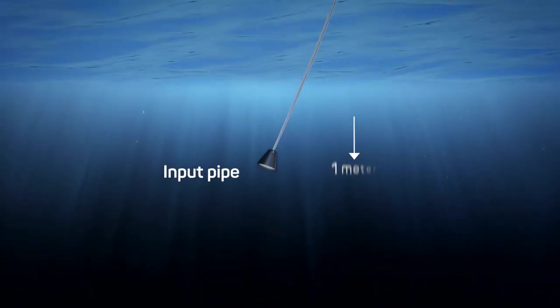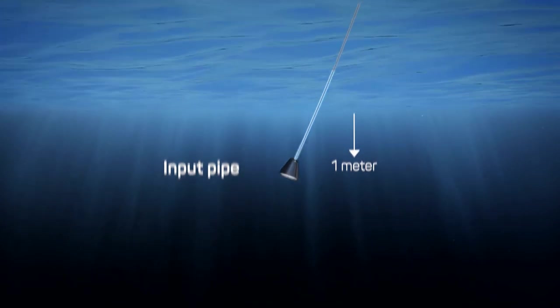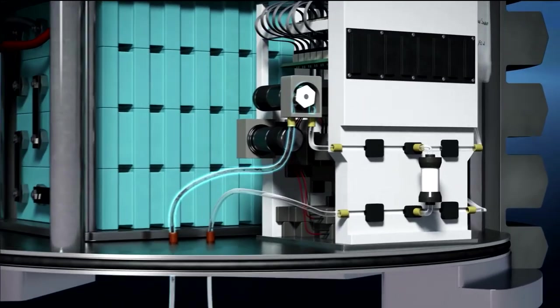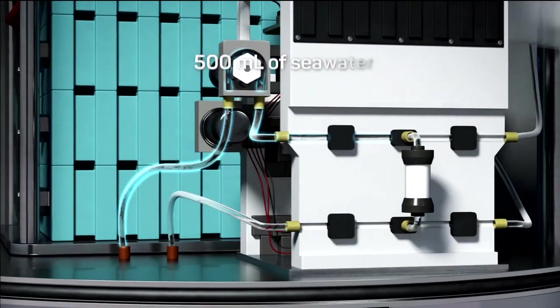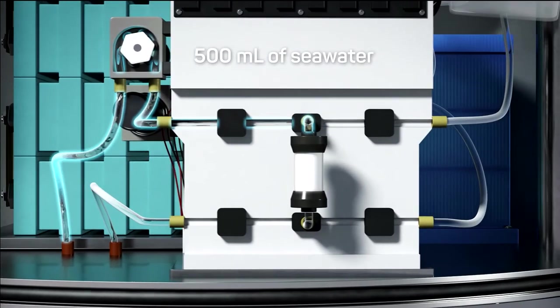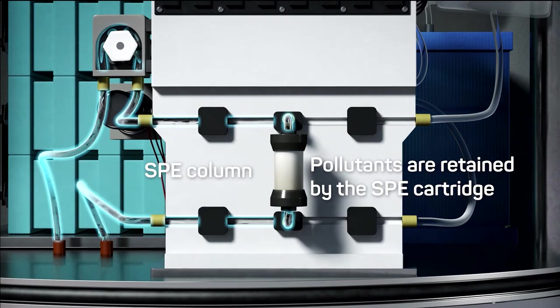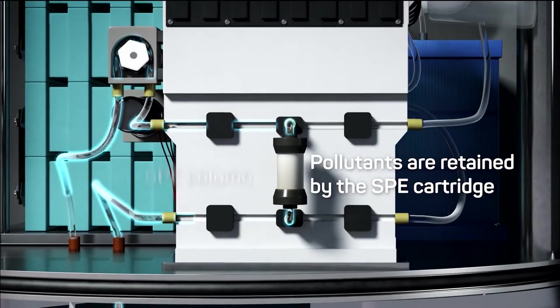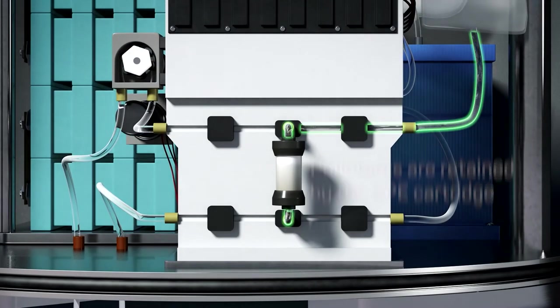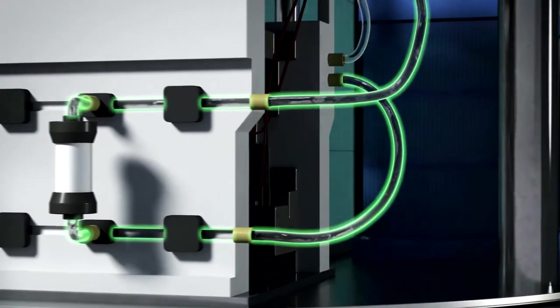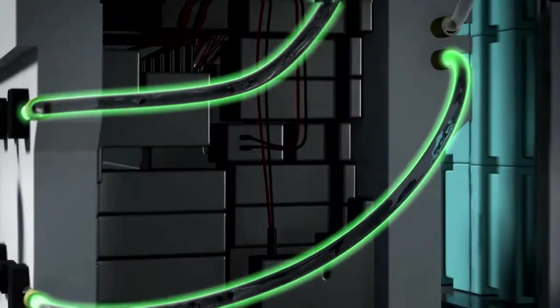First, the sampling system pumps the seawater from one meter depth into a solid phase extraction column to concentrate the contaminants. 500 ml of seawater passes through the column where the contaminants are retained within an absorbent cartridge. The clean water is eliminated through the output pipe. Next, an elution solvent is passed through the absorbent cartridge to elute the concentrated target pollutants.